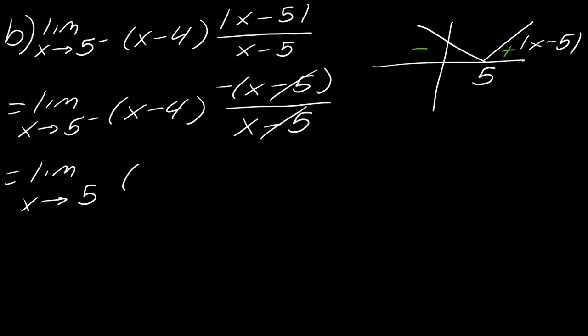So what I'm left with is really this X minus four times negative one. And so now notice I don't have a zero over zero anymore. I can just plug in five. So this becomes five minus four times negative one. So this whole thing will ultimately equal negative one again, totally by chance.